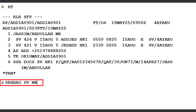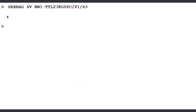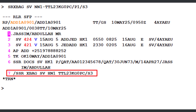Continue the SR command with NN1 (status code 'need', 1 unit of service), dash TTL 23KG 0PC (total allowance of 23 kg, 0 additional pieces), slash P1 (passenger number 1), slash S3 (segment number 3), then press Enter. Line number 7 of the PNR has been updated with the requested excess baggage service.